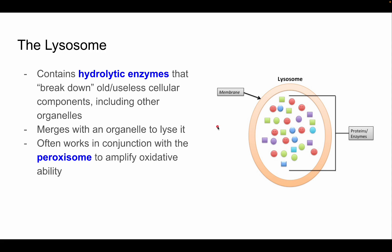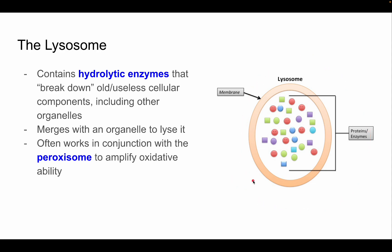The lysosome is a hydrolytic structure that breaks down useless or old cellular components, including other organelles. For example, if a mitochondrion is damaged, the lysosome will come in and hydrolyze it. It merges with organelles and often works in conjunction with the peroxisome to amplify its oxidative ability. Essentially, it's a vesicle containing digestive enzymes.